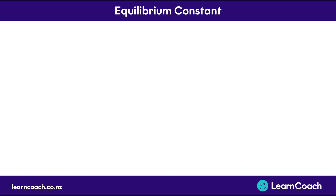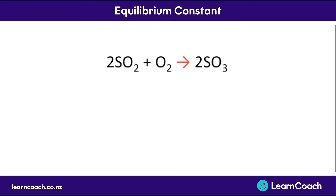Welcome to the video on equilibrium. In this video we're going to work out what equilibrium is and we're going to get into the equilibrium constant, which is the number that tells us about it. First let's start by looking at a reaction. If we have some sulfur dioxide, SO2, mixing with some oxygen, that's going to give us sulfur trioxide, SO3. That's a reaction.